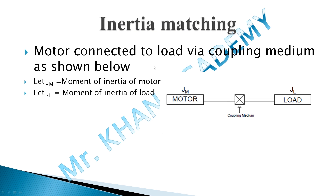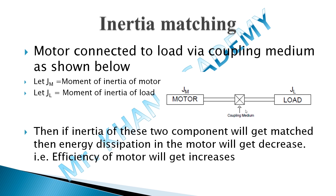Let's start inertia matching. Assume a motor is connected to a load via a coupling medium. On the motor side, the moment of inertia is Jm; on the load side, it is Jl. When Jm and Jl are matched, energy dissipation in the motor decreases, heat dissipation decreases, and ultimately the efficiency of the motor increases. Two factors influence heat dissipation: coupling ratio and velocity profile. Velocity profile was discussed in detail in 2.3; in this video we consider the coupling ratio with inertia matching.